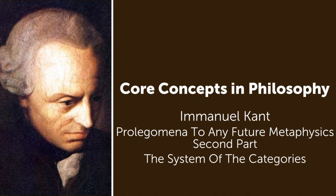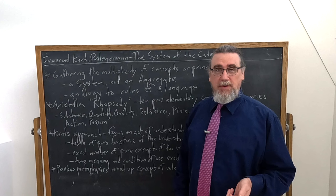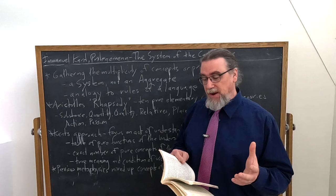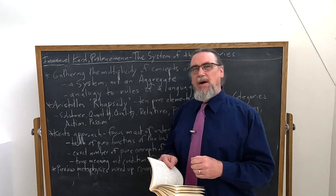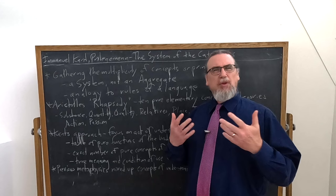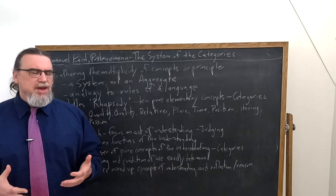At the very end of part two of his Prolegomena to Any Future Metaphysics, Immanuel Kant has an appendix to pure natural science, which is called 'Of the System of the Categories.' If you know much about Kant, even from preliminary or summary work, you know that this notion of the categories is really one of the keystones of his work.